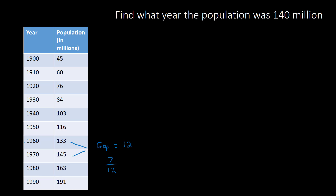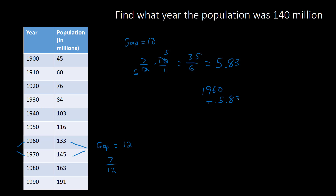So the question then is: what year is 7 twelfths of the way between 1960 and 1970? The gap there is 10. What is 7 twelfths of 10? Seven twelfths times 10 over 1 — 10 divided by 12 simplifies, giving 35 over 6, which is approximately 5.83 repeating. Adding 5.83 to 1960 gives 1965.8, which would approximate to 1966. And that concludes our lesson for today.